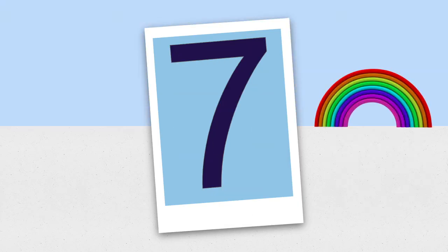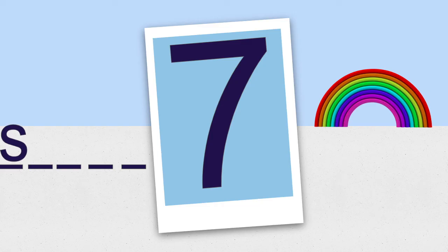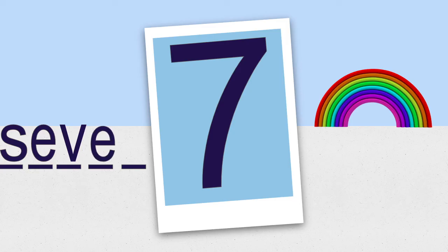Here's the number seven. This rainbow has seven colors in it. When I say the sounds, I want you to say the letter. S... e... v... e... n. S, e, v, e, n spells seven.